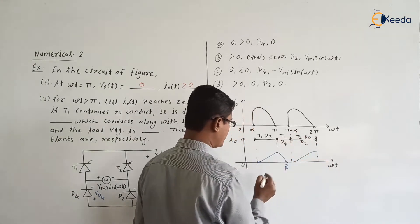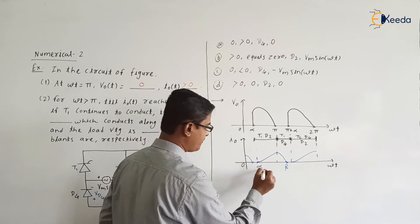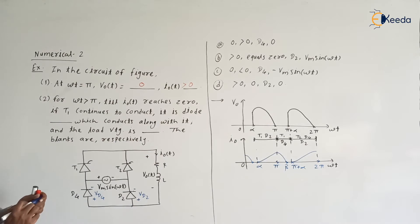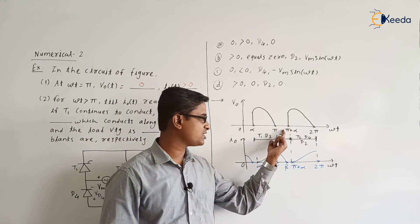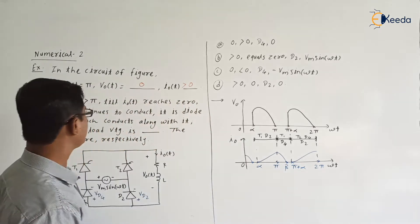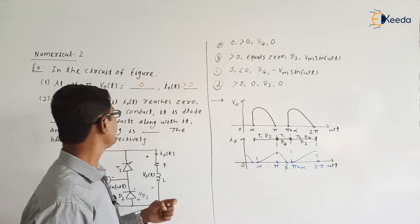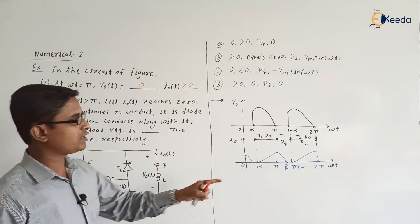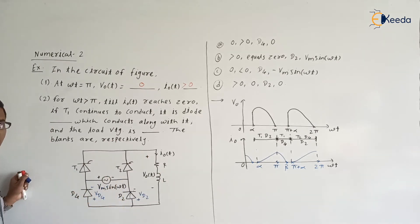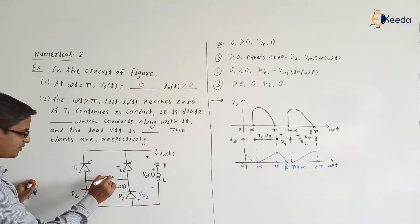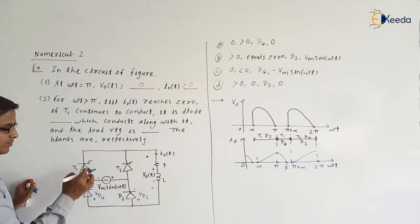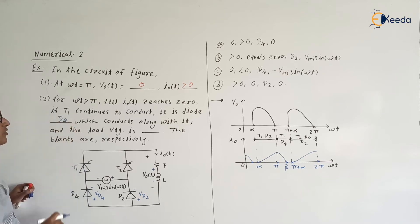At pi plus alpha, the inductor again stores energy. The intervals are: alpha, pi, beta, pi plus alpha, and 2 pi. For omega t greater than pi, till I zero of t reaches zero — that is beta. If T1 continues to conduct, it is diode D4 which conducts along with it. After pi, the supply voltage polarity is reversed, so the inductor releases energy through D4 and T1. Therefore, with T1, diode D4 is in conduction mode.